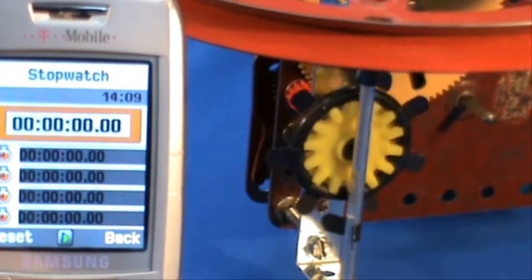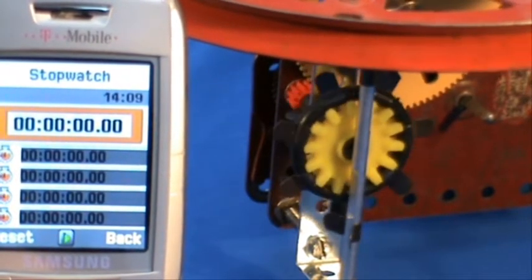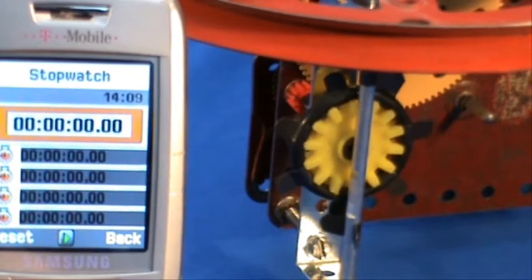As the 7 toothed wheel turns round, we'll get 14 beats. We can listen for them and time them with a stopwatch.